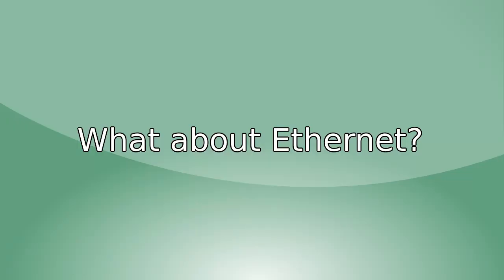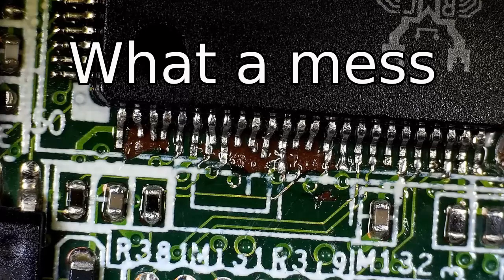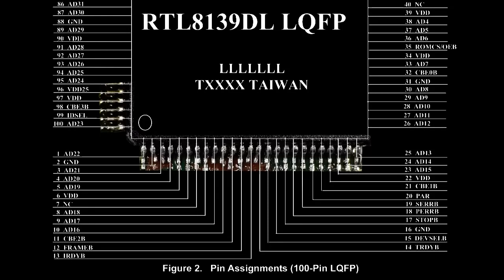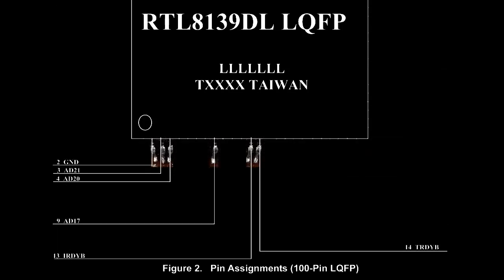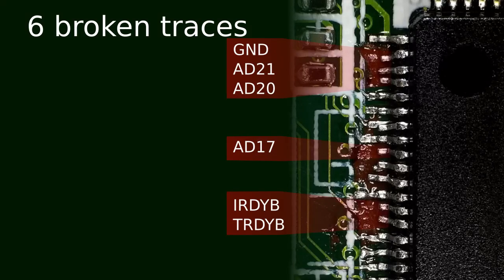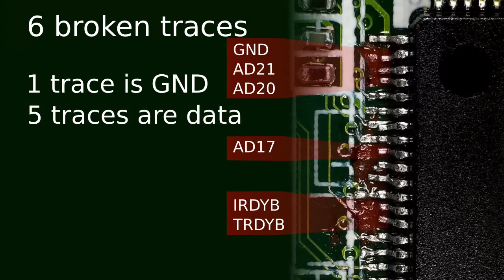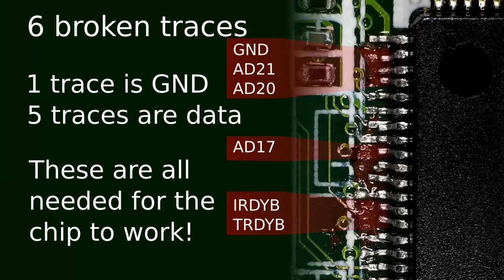So what about the Ethernet chip? I left a mess and broke a ton of pins. I managed to find a pinout of the chip and overlaid the microscope photo on it. Using this I identified the broken traces — six in total. One trace is just ground and five traces are data. These are all required.